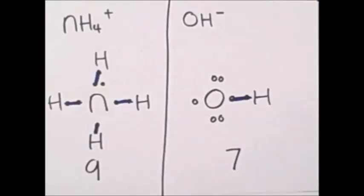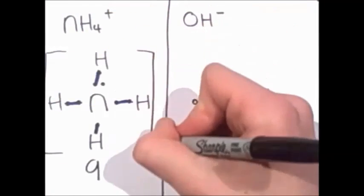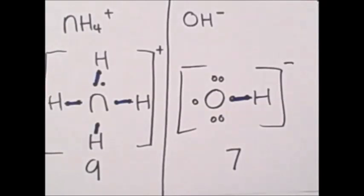These extra electrons give the compound a charge. For ammonium, we have one extra, so it's a plus one charge, and the hydroxide has one less, so it's a minus one charge. We show the charge by putting them in brackets and the charge on the outside.